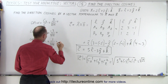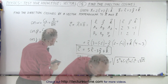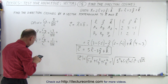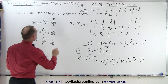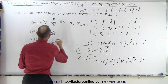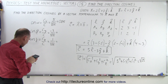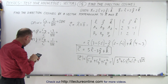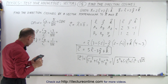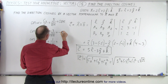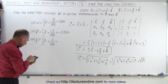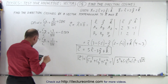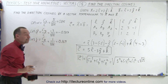Let's work those out numerically: 5 divided by √35 equals 0.845. The next one, −3 divided by √35, equals −0.507. And the final one, 1 divided by √35, equals 0.169.